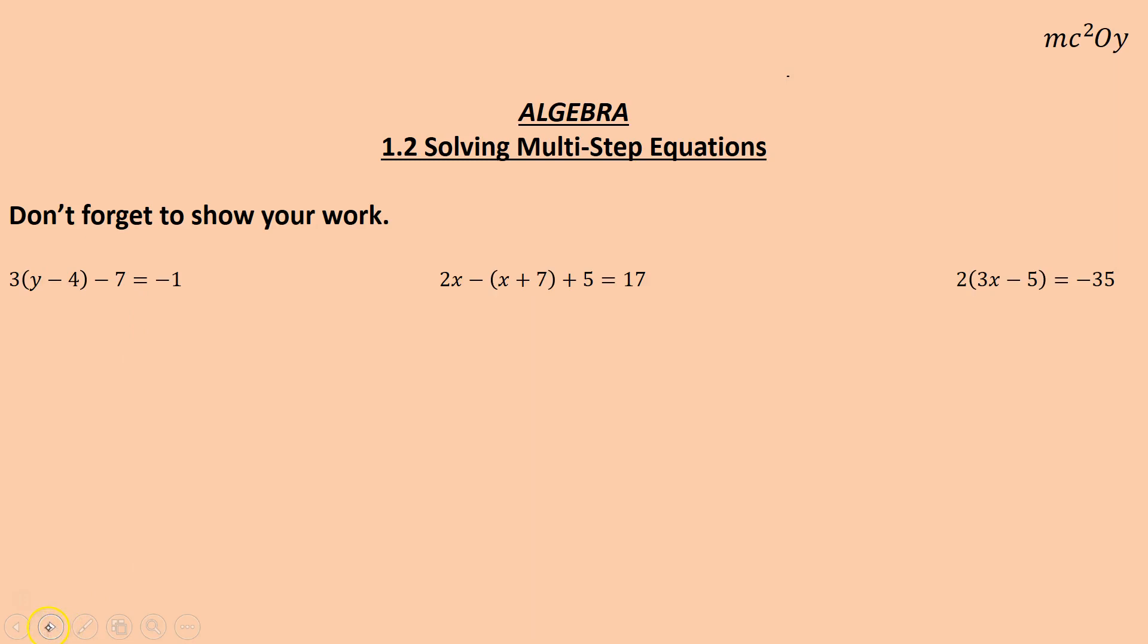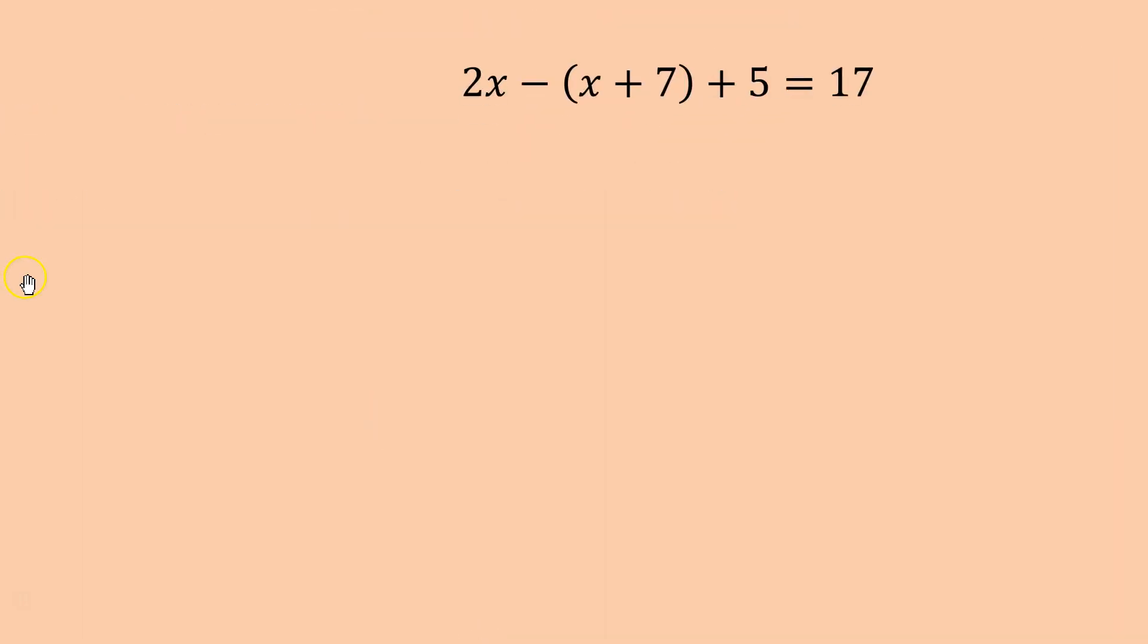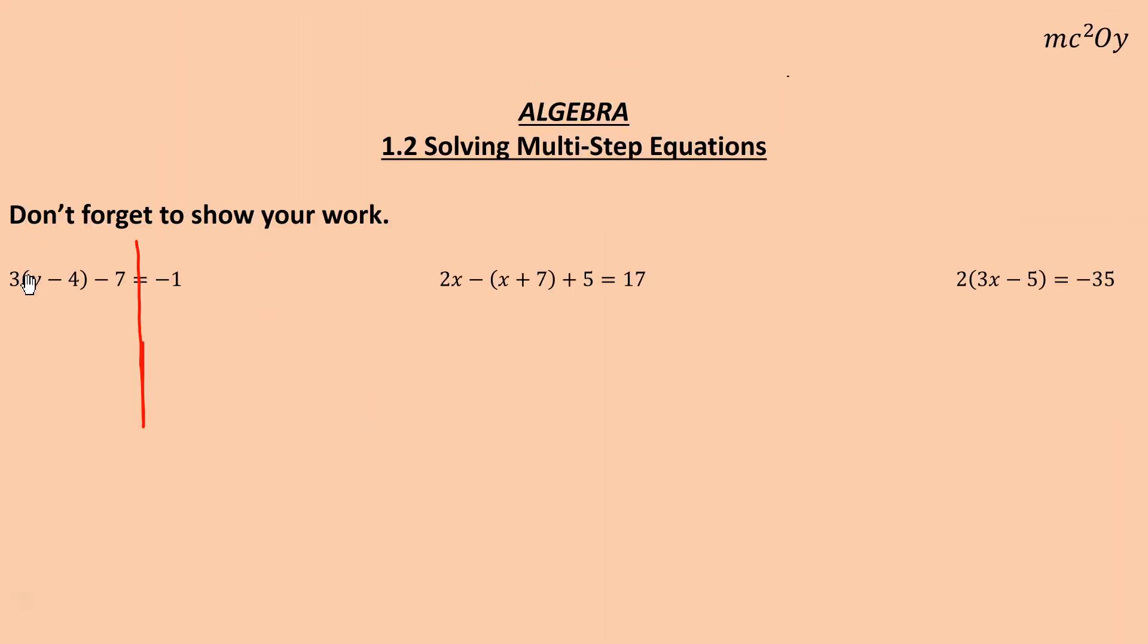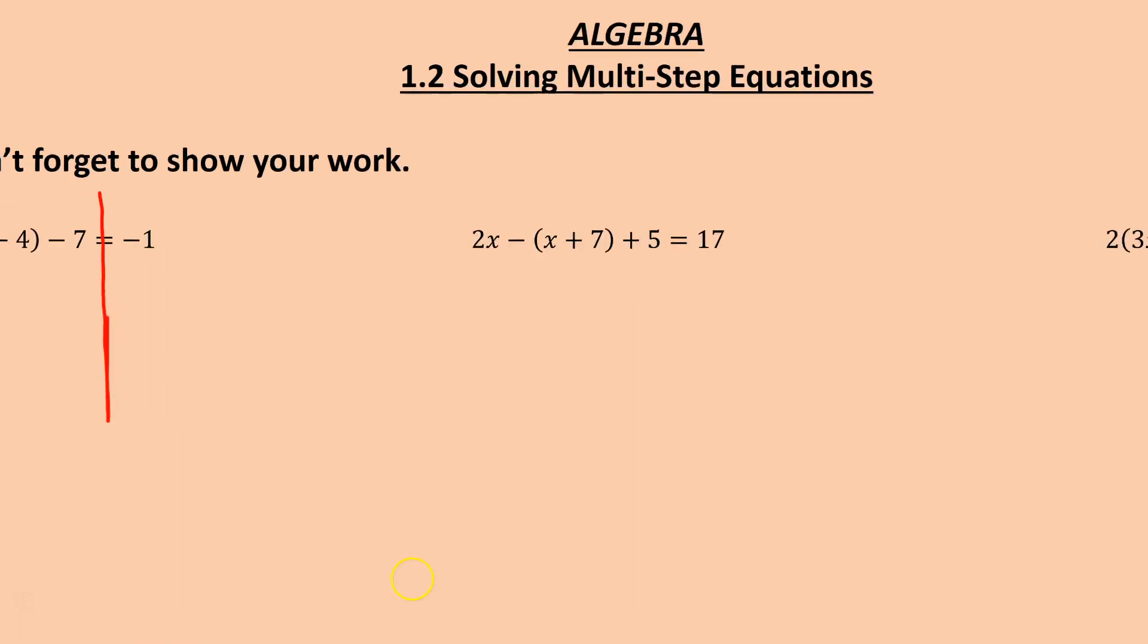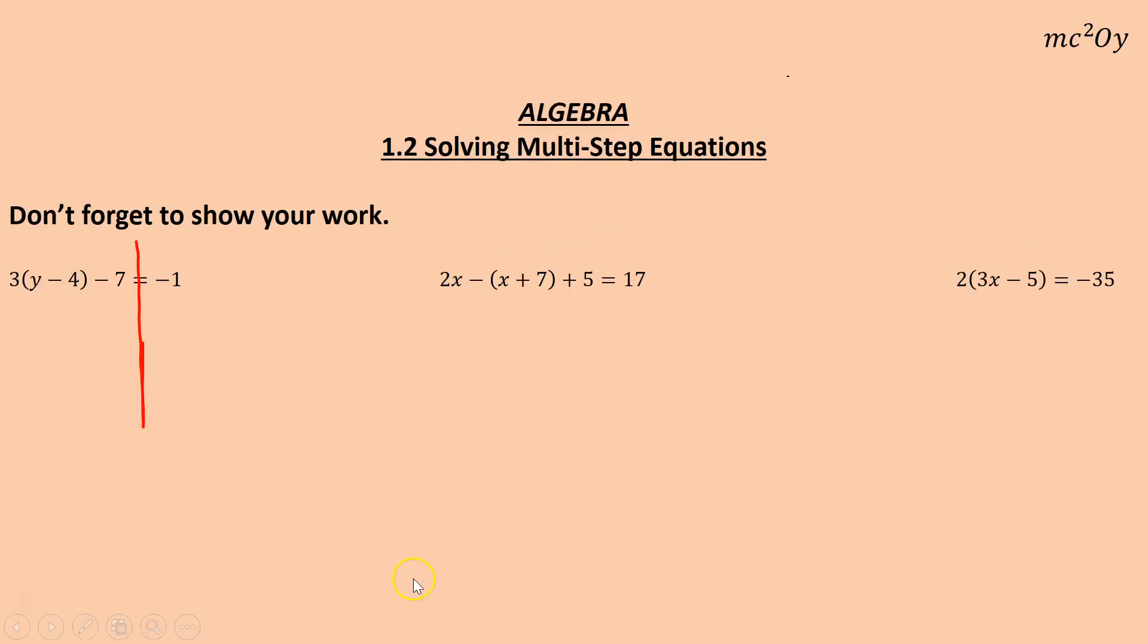Moving on to the next one. We're now going to add in some distributive property to solve this. So first step is going to be to do the distributive property. We get 3y minus 12. So 3 times y and 3 times negative 4 minus 12 minus 7 equals negative 1. Now you notice I said negative 4 because there's a minus in front of it.